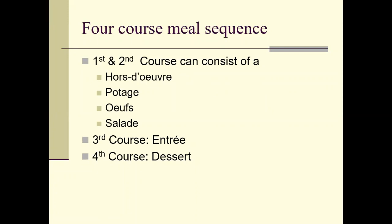Or you could decide to do an egg dish first, then a salad, then an entrée, then dessert. Those are different options for how you could develop a four-course meal sequence. It could be an hors d'oeuvre, a potage which is a soup dish, an oeuf which is your egg dish, or a salad dish. You get to decide how to incorporate that course into your four-course meal.